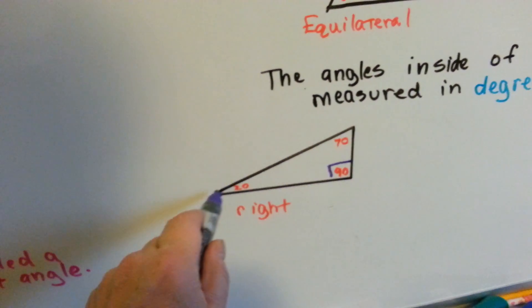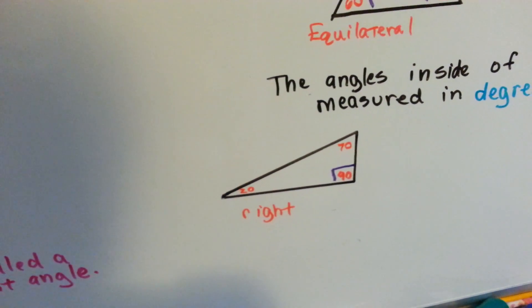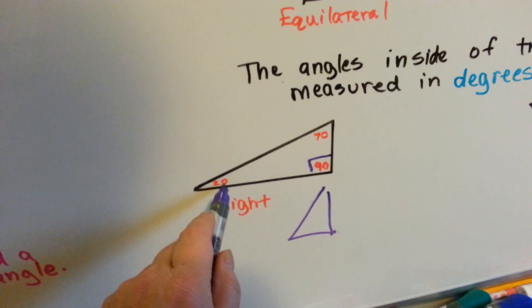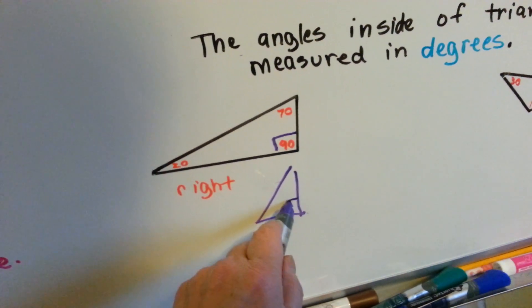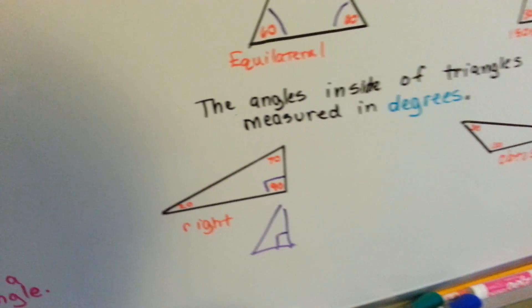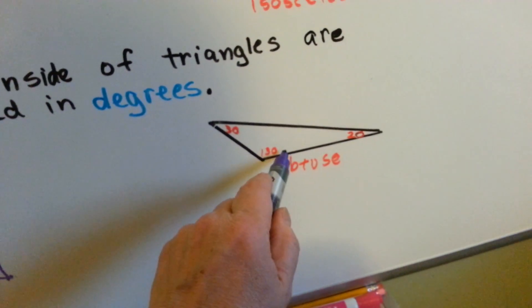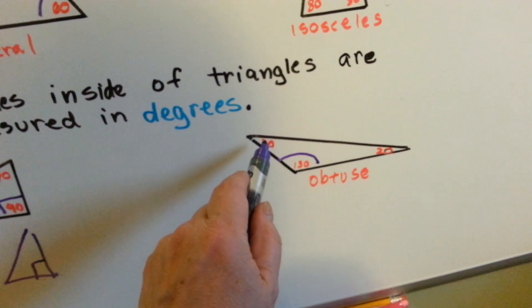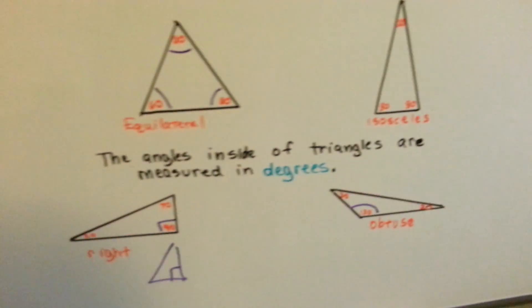So depending on how long this line is will depend on what the measure of the other two angles are. What if I made it really tall like this? Then that one wouldn't be 20 — it would be bigger. That one would still be 90, but then these would probably be 45 and 45 because they're bigger. In an obtuse triangle, we've got an angle that's really big — bigger than 90. This one's 130, and then we've got two smaller acute angles: 30 and 20. So triangles can be measured in degrees.